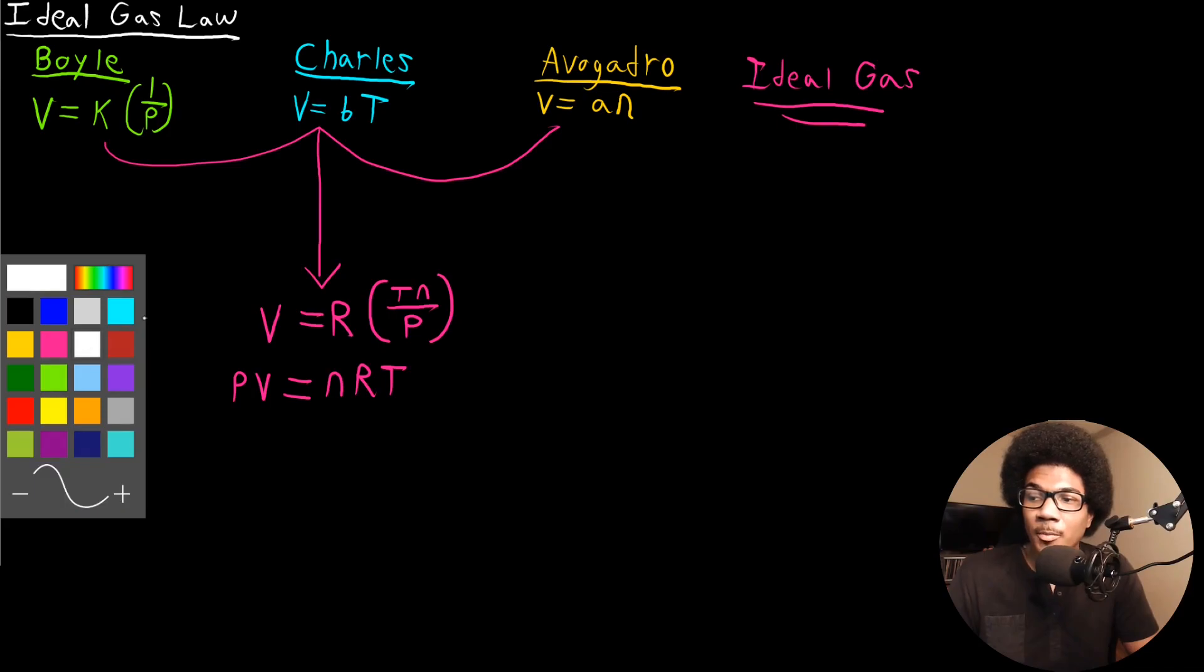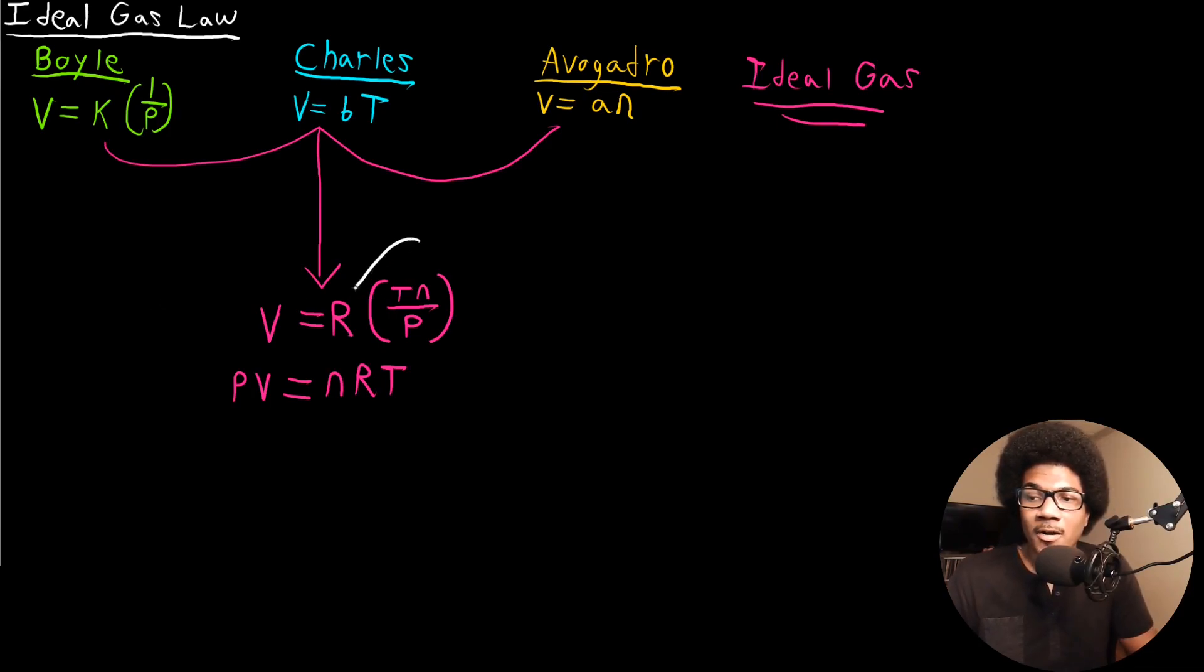Now let's talk a little bit more about R. R is very important. R is going to be our universal gas constant. It has a value, it has multiple values depending on your units, but the one that is used most often is this value: 0.08314 and the units for that is liter ATM per mole per Kelvin.